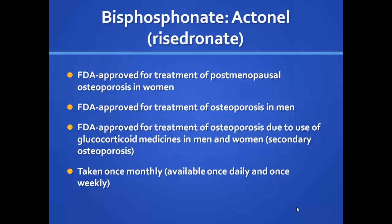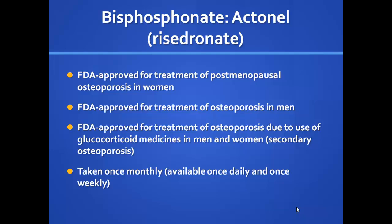Actonel (risedronate) is also indicated for postmenopausal osteoporosis, osteoporosis in men, and steroid-induced osteoporosis — available once daily, once weekly, or once monthly. We use it infrequently. Boniva (ibandronate), known from Sally Field commercials, is for postmenopausal osteoporosis and is taken once monthly by pill or by infusion. We rarely use either of these; risedronate in particular doesn't stay in the bone as long as alendronate.